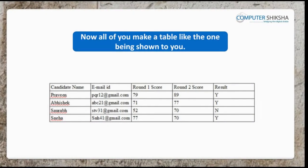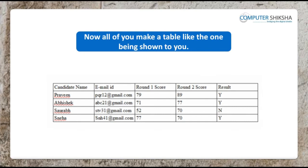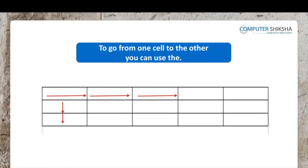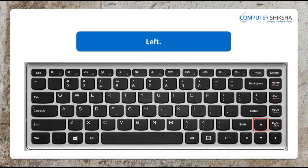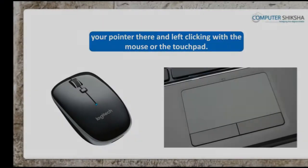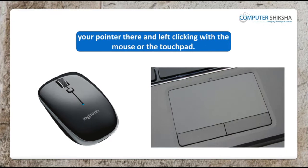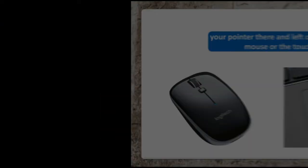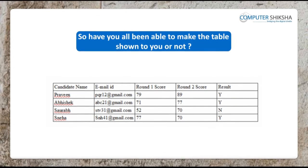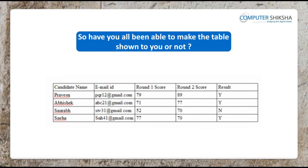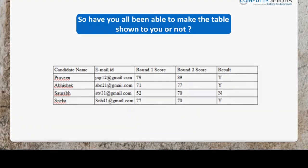Now, all of you make a table like the one being shown to you. To go from one cell to the other, you can use the left, right, up, and down arrow keys. Or you can get to the desired cell by taking your pointer there and left-clicking with the mouse or the touchpad. Have you all been able to make the table shown to you? If not yet, then hurry up and make the same.